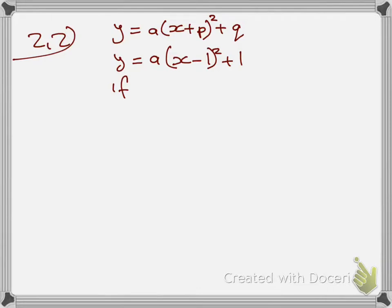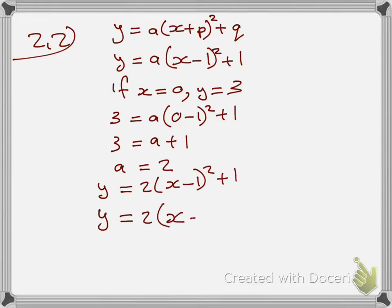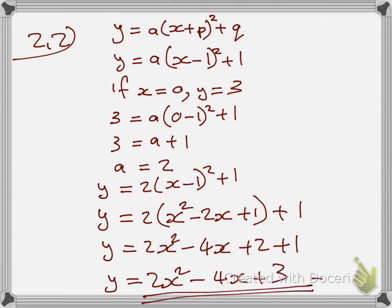Using the y-intercept: if x equals 0, y equals 3. Substitute — where there is y put 3, where there is x put 0 — and solve for a. Your a equals positive 2. Go into the completed square format, put 2 where there is a, and expand the brackets: 2 times open bracket x squared minus 2x plus 1, close bracket, plus 1, giving 2x squared minus 4x plus 2 plus 1. Many students were leaving out the plus 1 — remember it or you lose marks. So your final answer in standard format is 2x squared minus 4x plus 3.